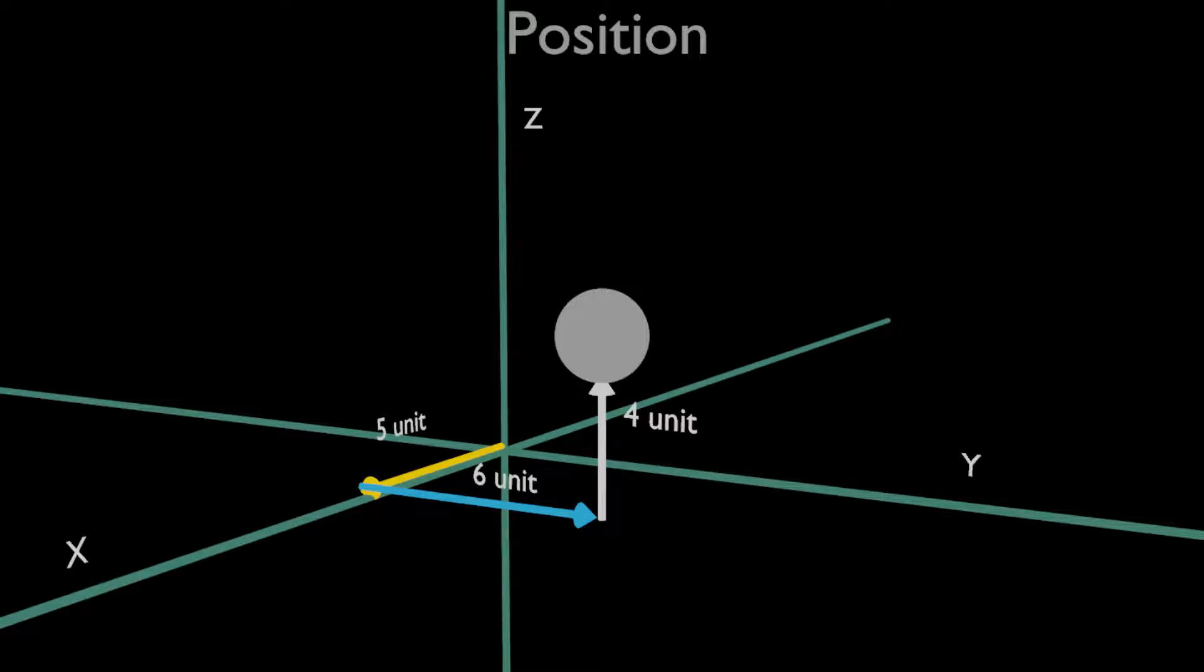So now we can describe the position of that ball with three numbers: five, six, and four. These numbers are called Cartesian coordinates. In vector form, we can also represent this position.